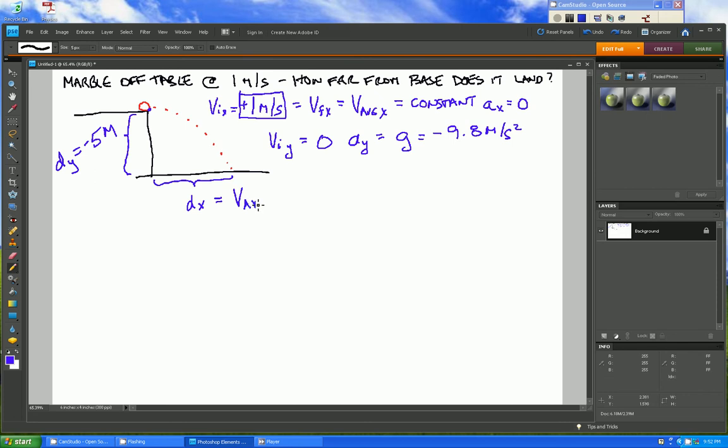We would know that is going to be equal to the average velocity in the x direction times the time in flight. We have the average velocity in the x direction and that is right above, so we can plug that in. We have one meter per second times this time in flight. Now we need to find that time in flight and we are good to go to solve this distance in the x direction from the base of the table.